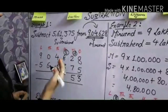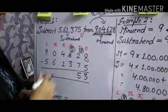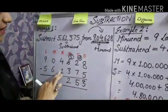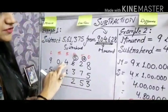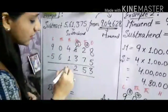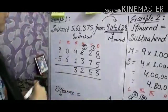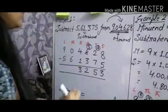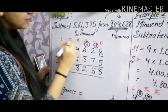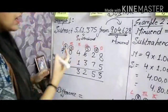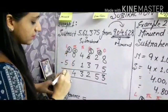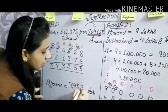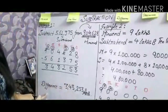In the hundreds place: can we subtract 3 from 5? Yes — 5 minus 3 gives you 2. In the thousands place: 4 minus 1, no need to borrow — gives you 3. In the ten-thousands place: 0 minus 6 — we cannot subtract, so we take a borrow. This becomes 10 and the lakh digit 9 becomes 8. So 10 minus 6 gives you 4 and 8 minus 5 gives you 3. Our final answer is 3,43,253, which is known as the difference.